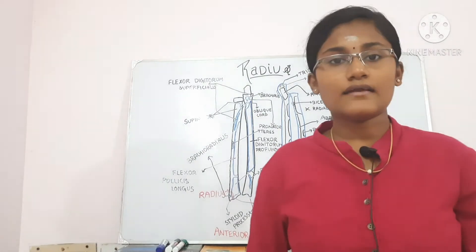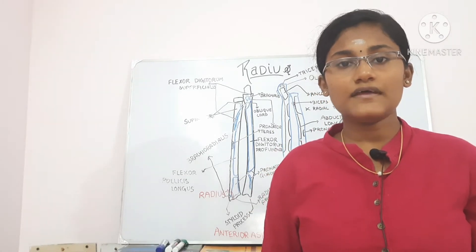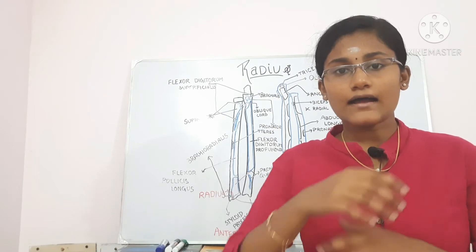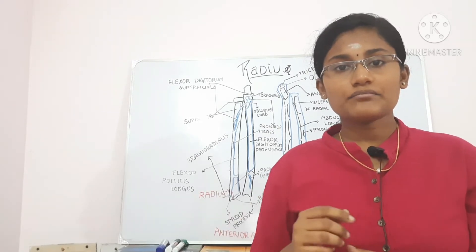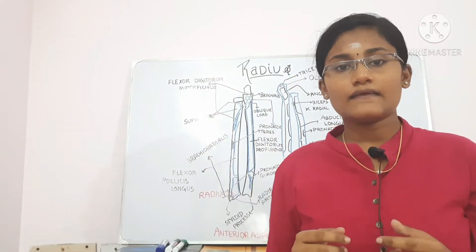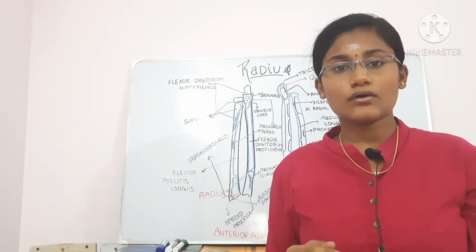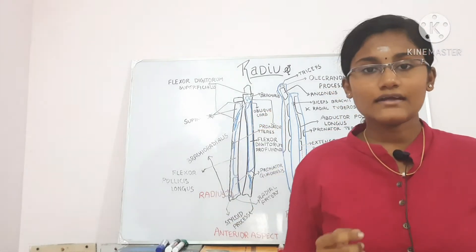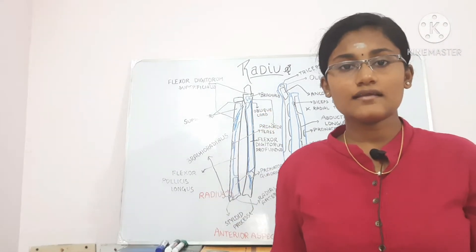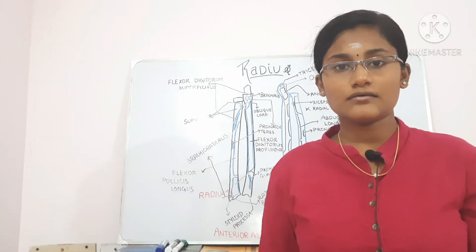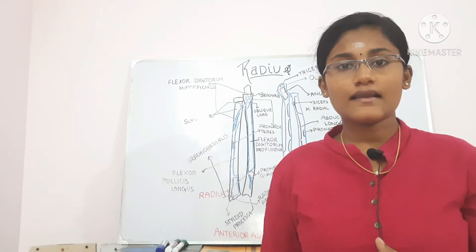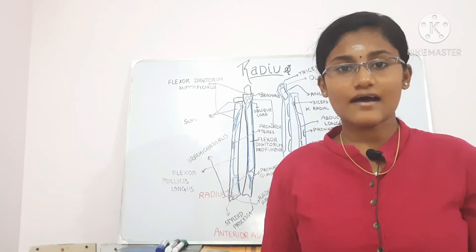The next condition is subluxation of the head of the radius. This happens when the hand of a child is forcefully pulled and the head of the radius gets dislocated from the annular ligament. That is all about the upper end; let's move on to the shaft.